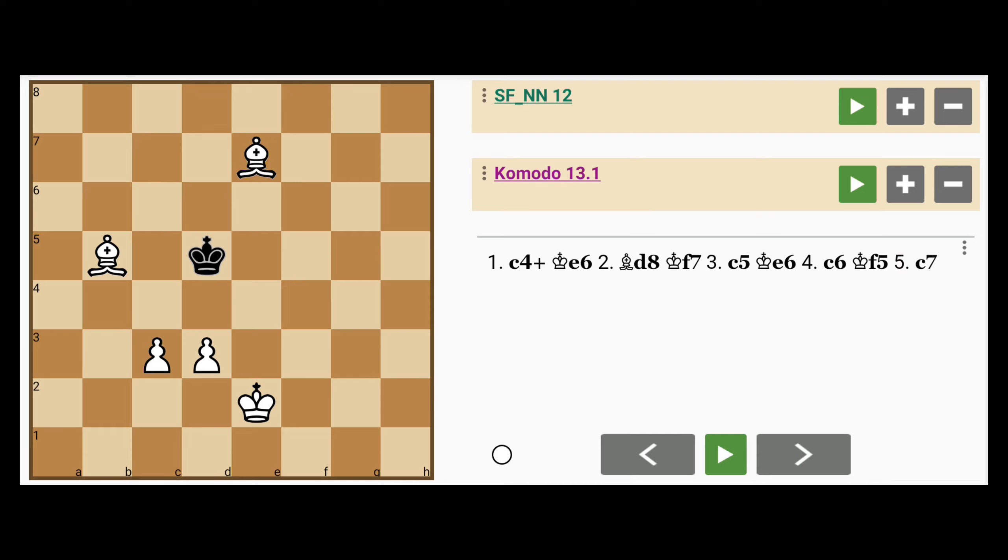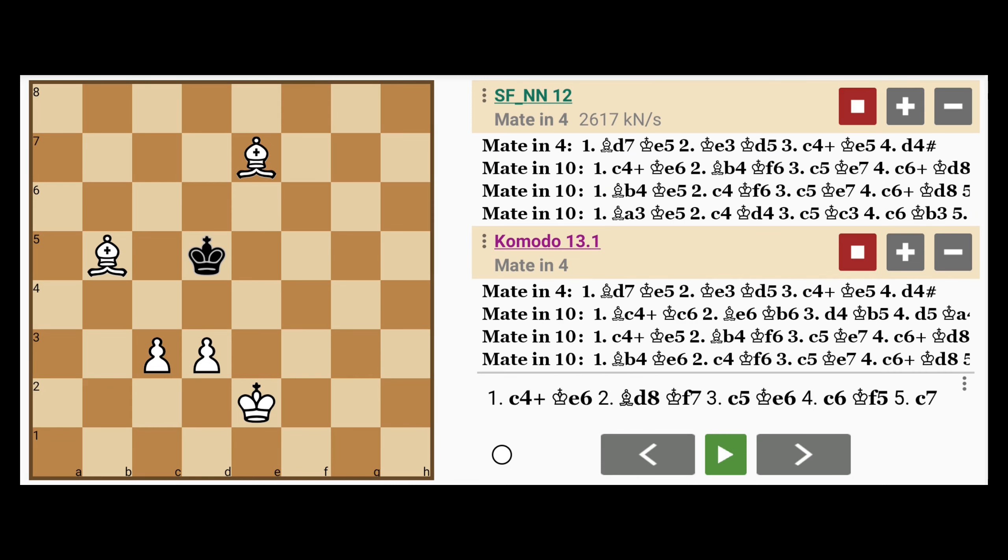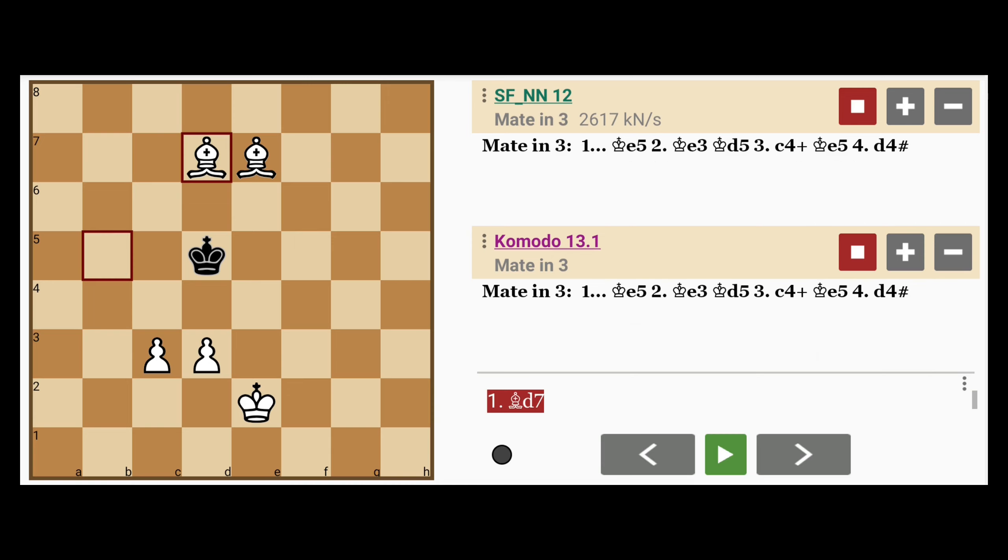But is promotion even necessary here? The experienced player would see that it isn't, and that there is a faster way to win. Let's confirm with the engines. Well, it's pretty clear now isn't it? As you can see, instead of mating in 10 moves, we can mate in 4 by playing bishop to d7.